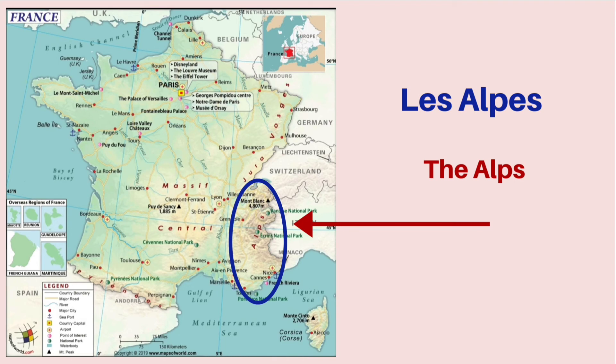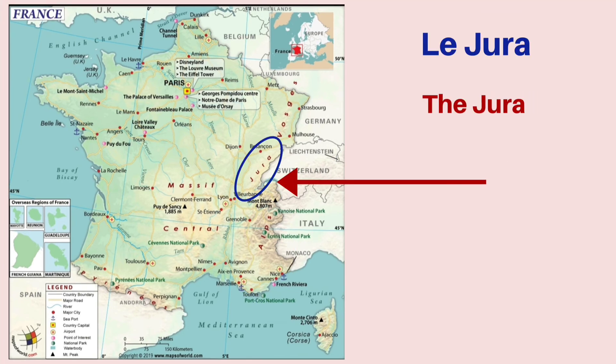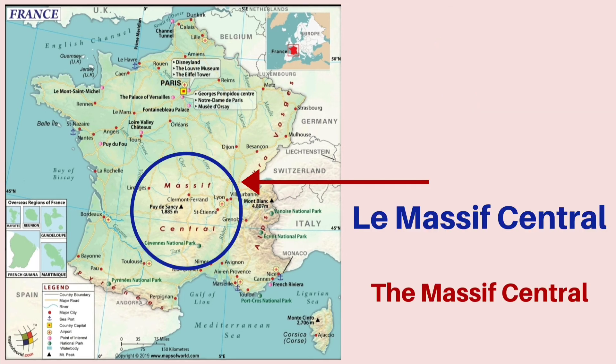The Alps run along the border with Italy and Switzerland. Next, you have le Jura, which is the Jura, just above the Alps. You also have le Massif Central, the Massif Central, which is in the center of the country of France.